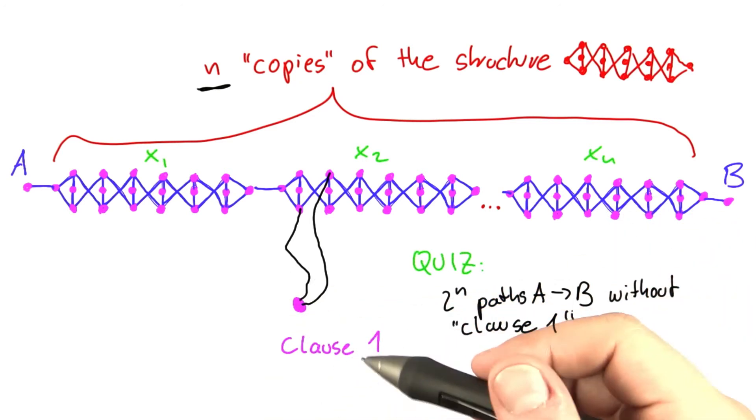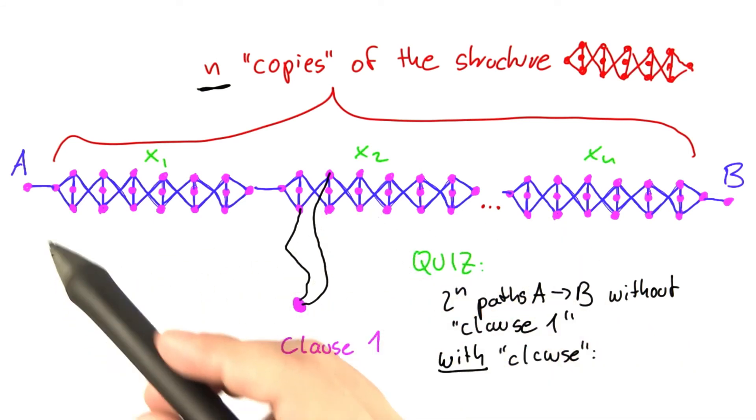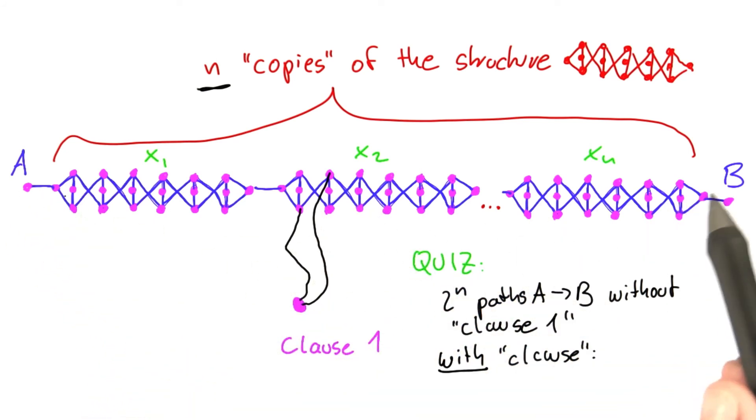So if we do not have clause one—and I realize it's not the best name for that vertex, but that's okay—so if we have to visit this vertex here, it's now become part of our graph. How many shortest paths from A to B do you have then that visit all vertices?